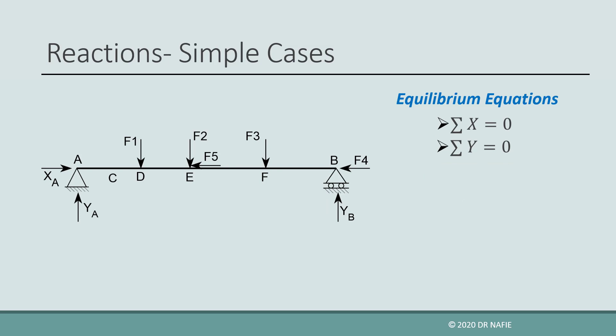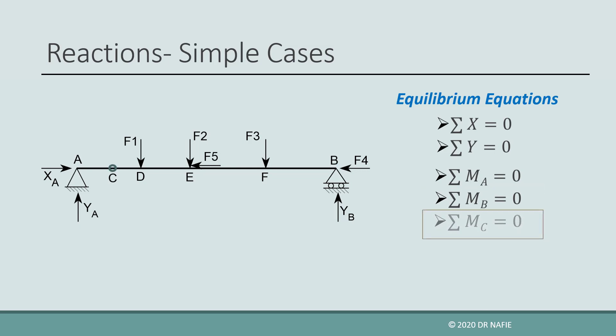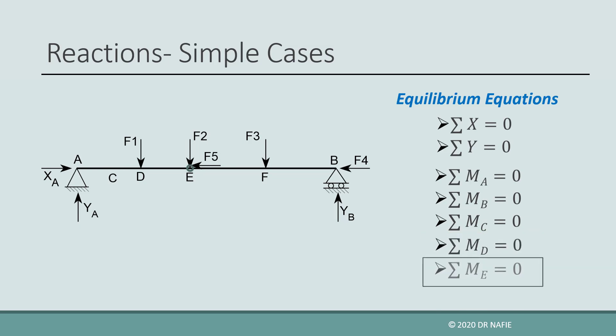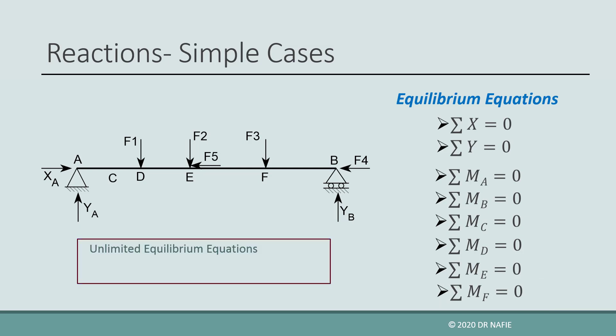The application of the first two equilibrium equations, sigma x and sigma y, is straightforward. However, the application of the third equation, sigma m, needs some discussion. We can fulfill the equation by taking moments about any point in the plane of the structure. Taking moments about points A through F, we can generate six moment equilibrium equations. In fact, we can generate an unlimited number of equations, but we only have three unknowns and only need three equations. Only three of these equations are independent; the rest are redundant and will not give any new information.